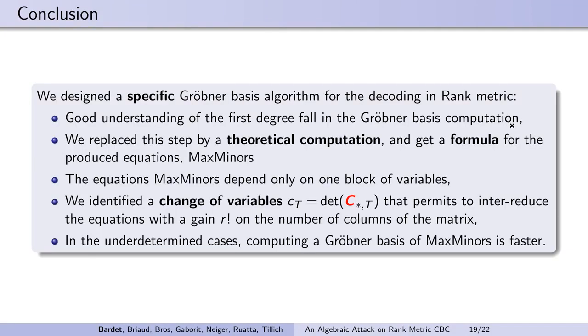In conclusion, with a good understanding of the first steps in a general Gröbner basis computation, we were able to perform the first step theoretically and get a formula for new equations, the minors, that depend only on one block of variables. We then introduced those equations before adding the quadratic ones, using a change of variable that saves a factor of factorial r on the number of columns of the matrix. This leads to an algorithm more performant than all previously known attacks.